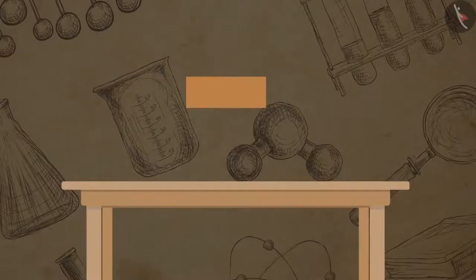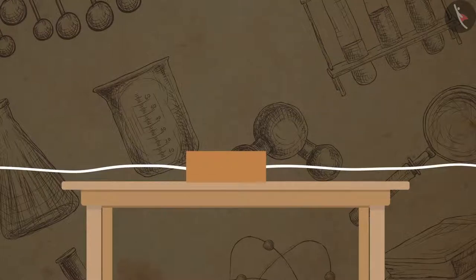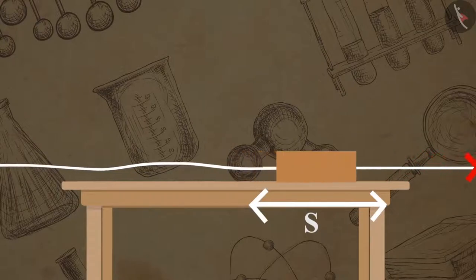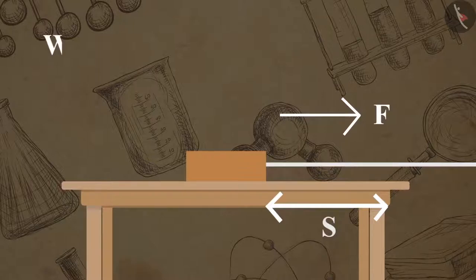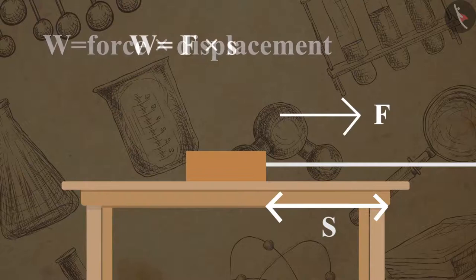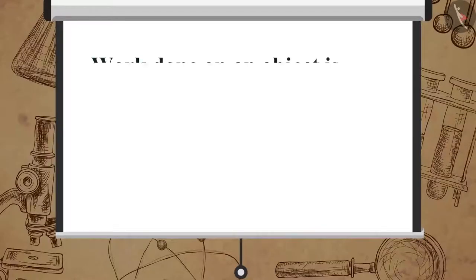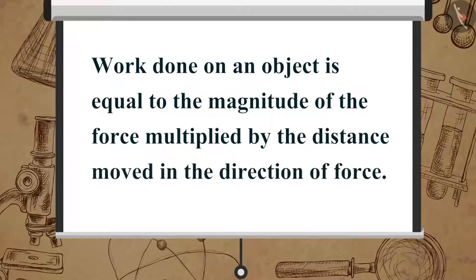Take a wooden block and place it on a table. Let a constant force F be applied on the wooden block, and let the wooden block displace through a distance s in the direction of force. Let the work done here be W. Work done W is equal to force multiplied by displacement, which is equal to F multiplied by s. Therefore, work done on an object is equal to the magnitude of the force multiplied by the distance moved in the direction of force.